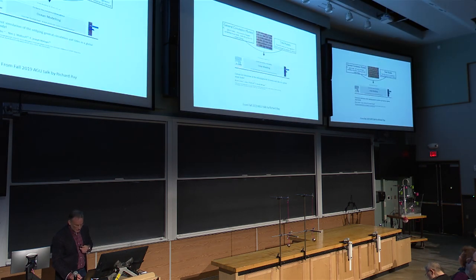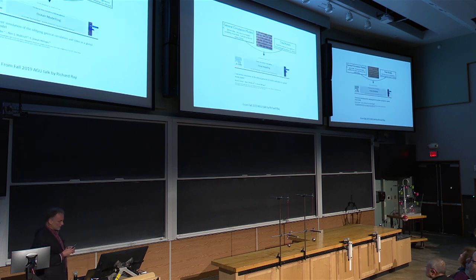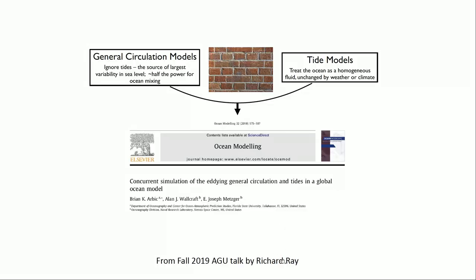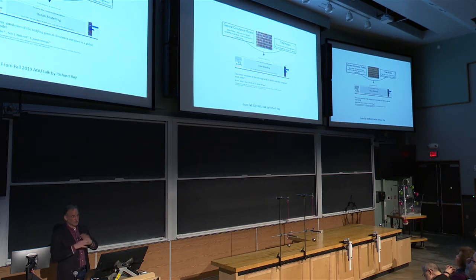I'm kind of proud of this because Richard Ray — the world's leading expert on analyzing tides — gave a talk a few months ago and here's his summary of my paper: concurrent simulation of the eddying general circulation driven by the atmosphere and tides, published in 2010. What he's saying is before this paper there was a brick wall between tide models and general circulation models. Tide models tended to treat the ocean as a homogeneous fluid with no weather, no climate — just tides. And general circulation models ignored tides. But then we put it all together.